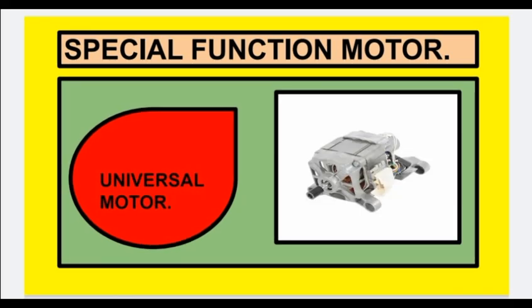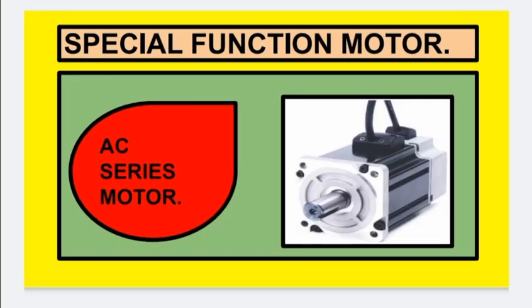Next is the universal motor, which is an important one. A universal motor operates with both AC as well as DC, which is why it is called a universal motor. You can use either AC or DC for operating this motor.